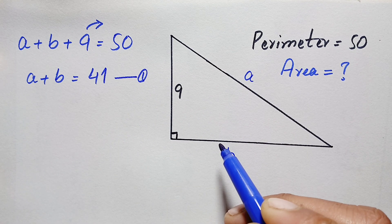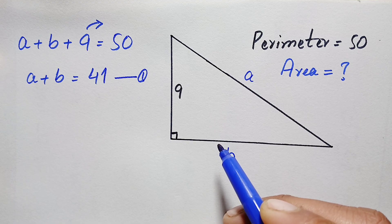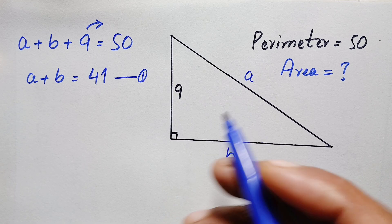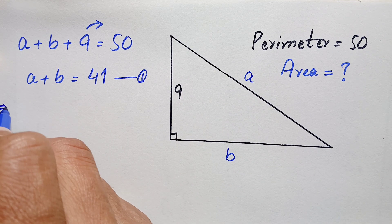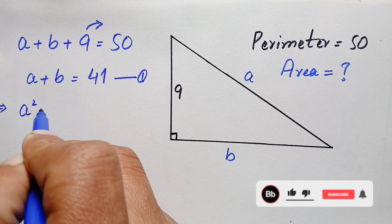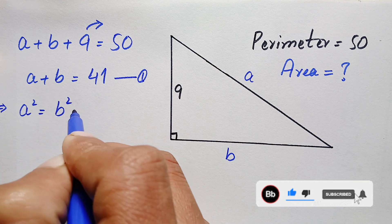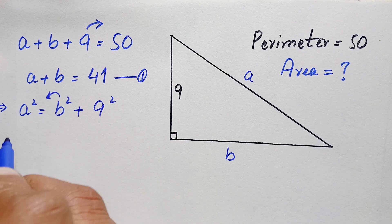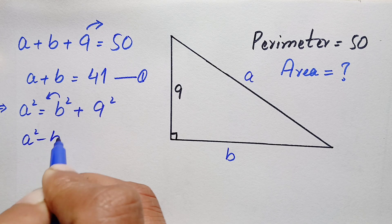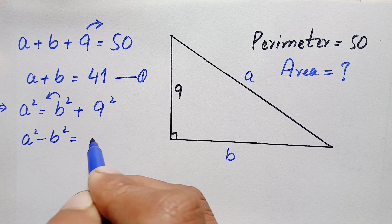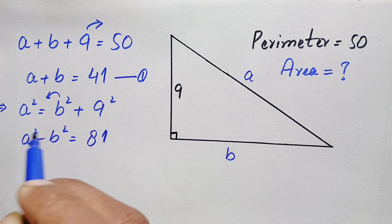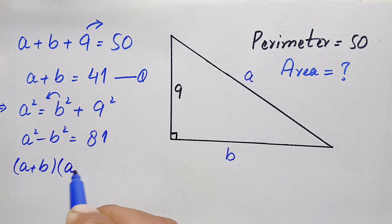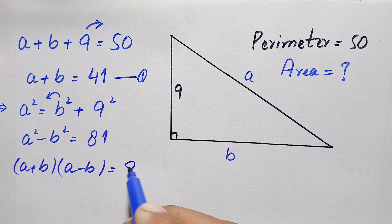This is a right angle triangle, so we can apply the Pythagorean theorem. By the Pythagorean theorem, the square of the hypotenuse equals base squared plus perpendicular squared. From this figure, the hypotenuse is A, so A squared equals B squared plus 9 squared. Taking B squared to the left hand side, A squared minus B squared equals 81. Using the algebraic identity, A plus B times A minus B equals 81.